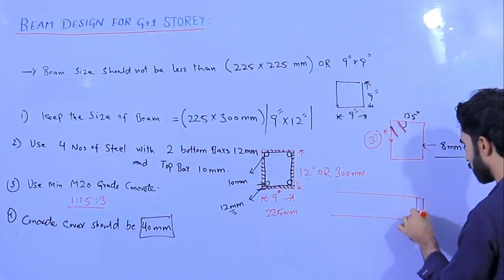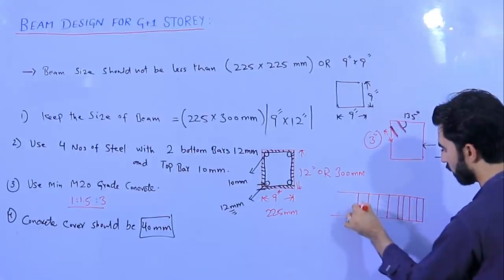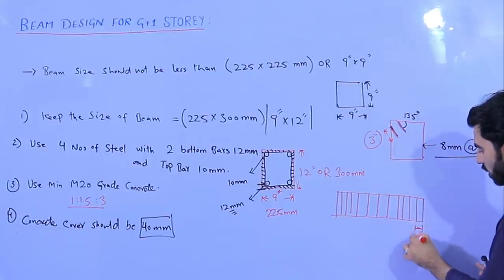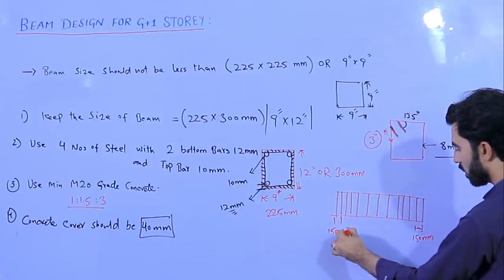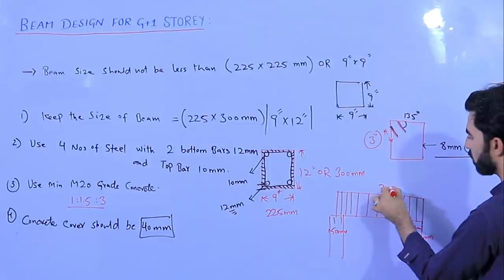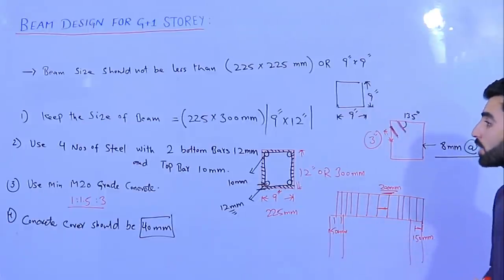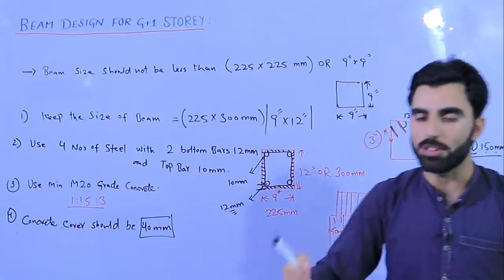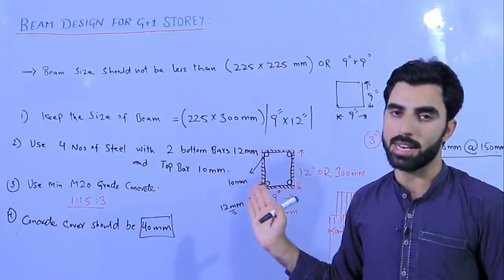Near the edge supports, the stirrup spacing should be 150 mm. The supports are the columns, as you can see. At the mid-span of the beam, you can increase the spacing to 200 mm. This is the beam design for G plus one story, which can be used by non-structural engineers and contractors to safely build their projects.